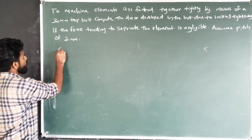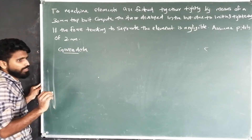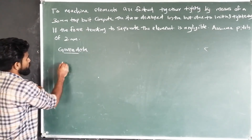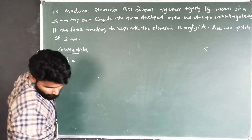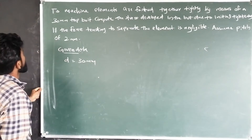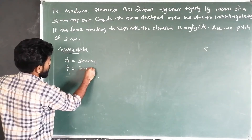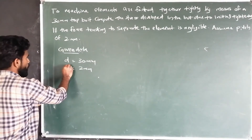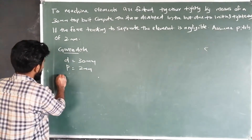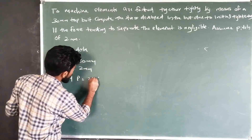As usual, given data: 30 mm tap bolt, so D is equal to 30 mm. The force tending to separate the elements is negligible. Pitch p is equal to 2 mm. Note that small p is the pitch, while capital P is the load.